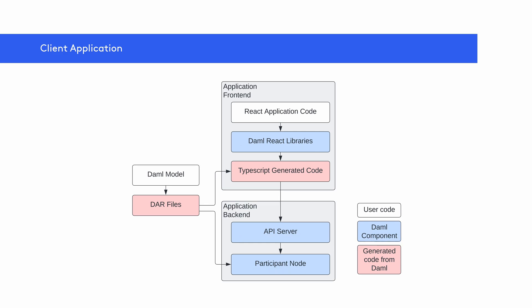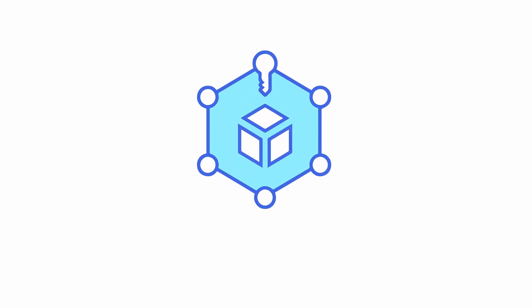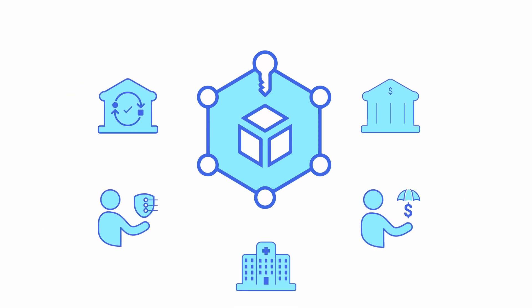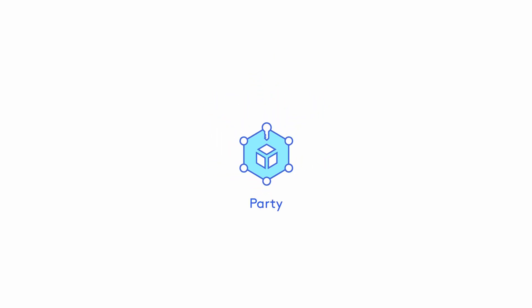Given this architecture, we now need to understand how users of DAML applications interact with the ledger. For that, we need to understand the relationship between parties and users. When we create parties in our templates, we give them certain authority to create contracts with other parties and exercise choices on those contracts. These parties represent legal entities such as individuals and institutions. One way to think of a party is as a role that has certain authority to perform certain actions.